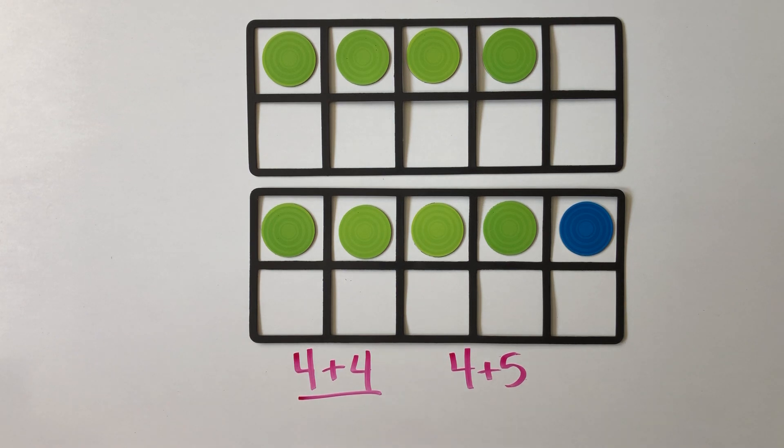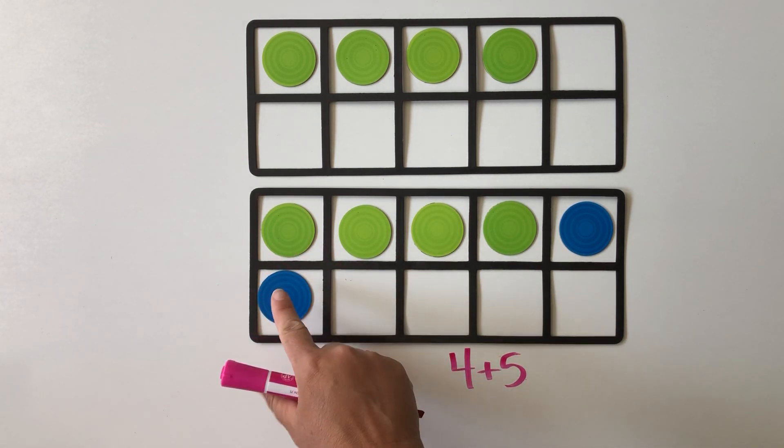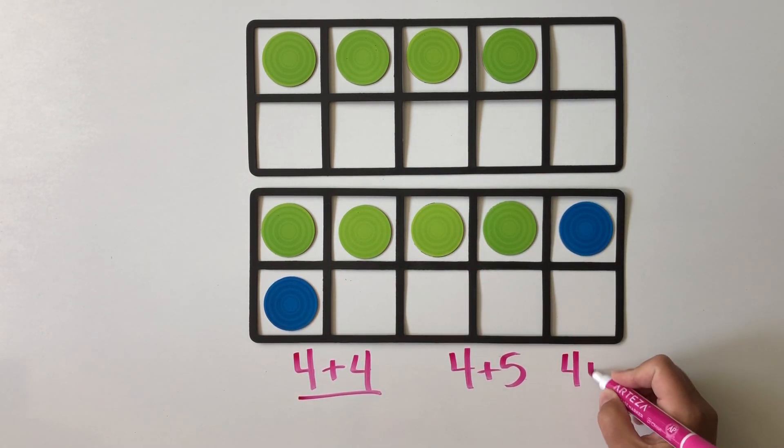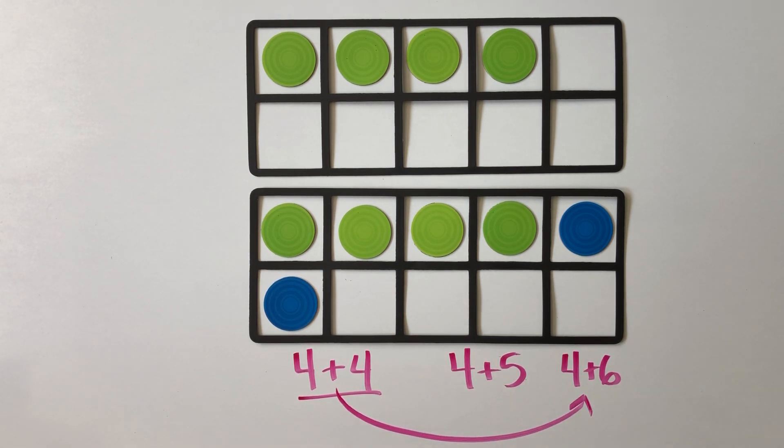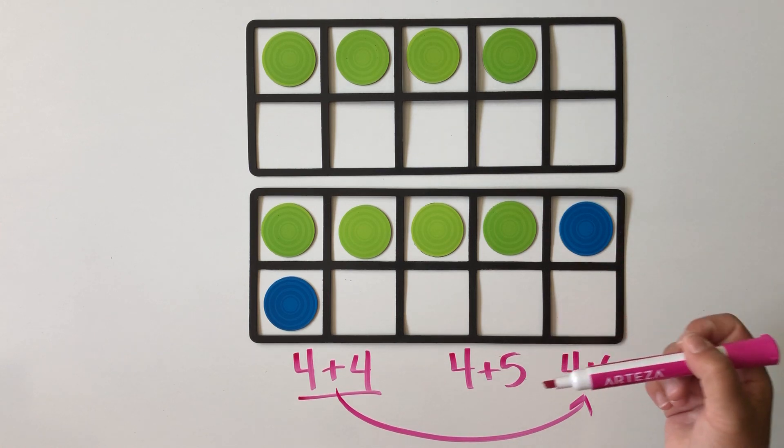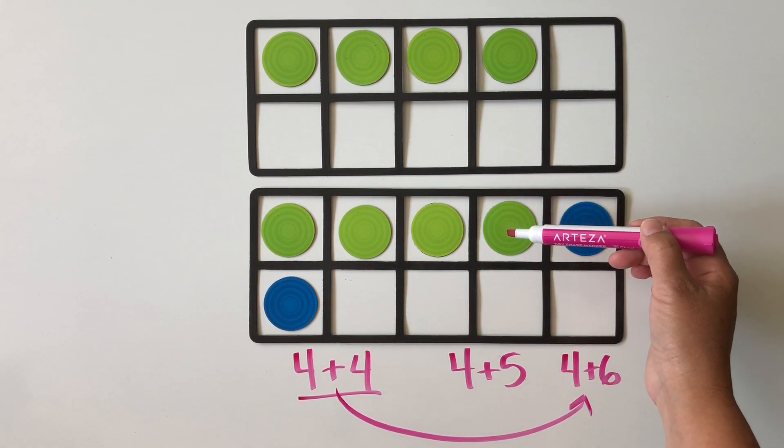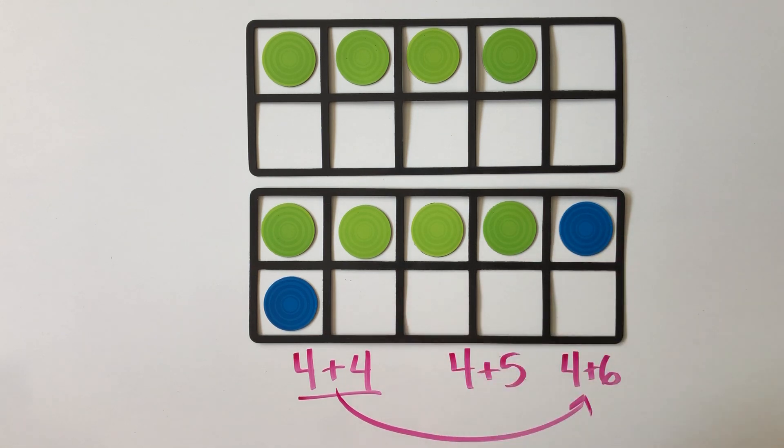What if we see 4 plus 6? Again, we can build on what we know about this doubles fact to solve 4 plus 6, because we can easily see that 4 plus 6 is just 4 plus 4 to make 8 and then 2 more to make 10.